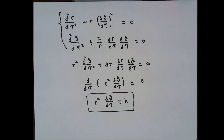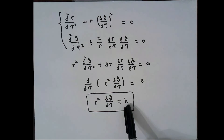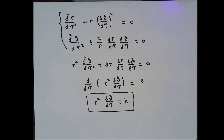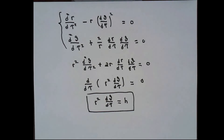That second equation has a very interesting property. If you multiply it by r squared, you can simplify the situation quite a bit — this equation is the same as the derivative with respect to tau of r squared times d theta d tau equals zero. That means r squared d theta d tau must be a constant, which I'm calling h. It's very important to understand something here: we're not doing any physics to speak of, and yet this looks like the angular momentum per unit mass. We'll come back to that later.